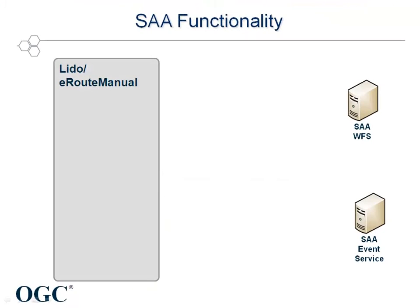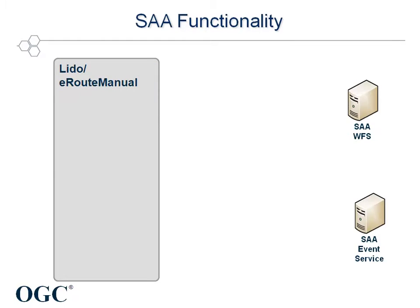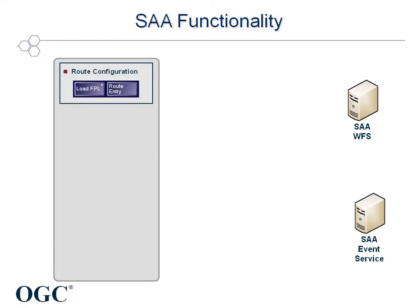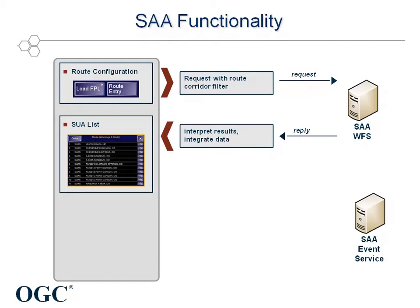In the course of the Special Activity Airspaces project, the data access functionality has been extended to retrieve airspace definition and reservation data from the OGC Web Feature Service and Event Service. When a route is entered manually or loaded, a geographical query consisting of the route corridor is sent to the WFS, to which the server replies with a set of special-use airspaces intersecting with the corridor. This set is integrated with E-Route Manual's internal database.